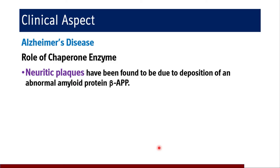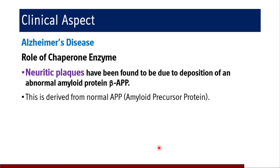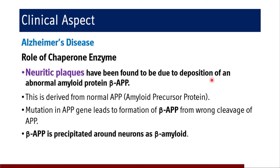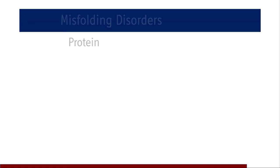The neuritic plaques have been found to be due to deposition of an abnormal amyloid protein — beta-APP, amyloid precursor protein. These neuritic plaques are derived from normal amyloid precursor protein. Mutation in the APP gene leads to formation of beta-APP from wrong cleavage of APP. This beta-APP precipitates around neurons as beta-amyloid, also contributing to the manifestations of Alzheimer's disease.